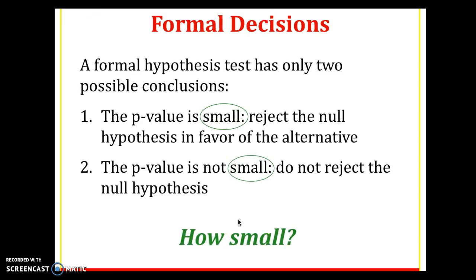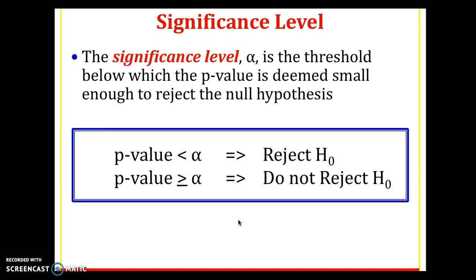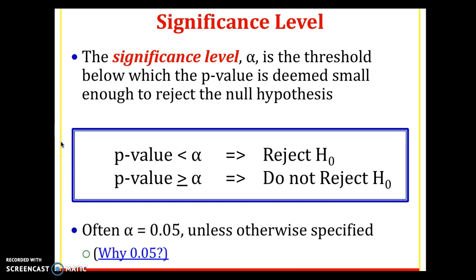So that's what I was talking about: what do we mean by 'small'? We reject the null hypothesis if the p-value is too small, and do not reject if it's not too small. But how small is too small? We're going to bring in the idea of a significance level. Significance level alpha is the threshold below which the p-value is deemed small enough to reject the null. If p-value is less than alpha, reject the null. If p-value is greater than or equal to alpha, do not reject the null. This alpha is essentially the cutoff line. I'll briefly touch on why 0.05 is commonly used — that'll be covered next time.